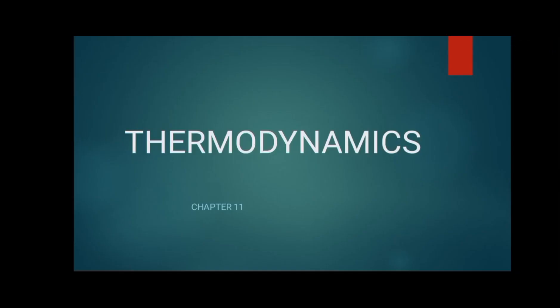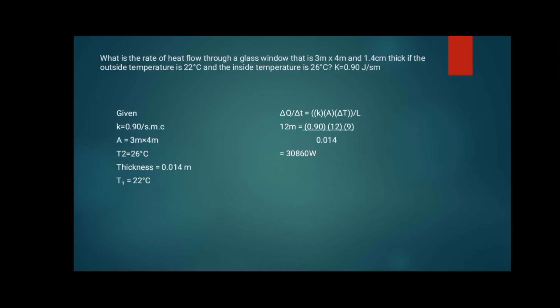Good day everyone, today we will discuss Chapter 11 in thermodynamics. We have a problem here: what is the rate of heat flow through a glass window that is 3 meters by 4 meters and 1.4 thick if the outside temperature is 22°C and the inside temperature is 26°C with K equals to 0.90 joules per second meter?